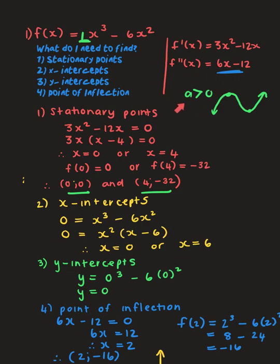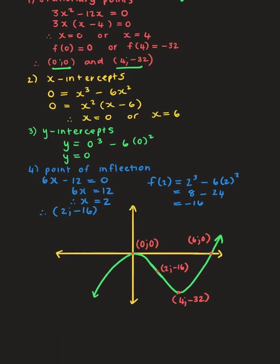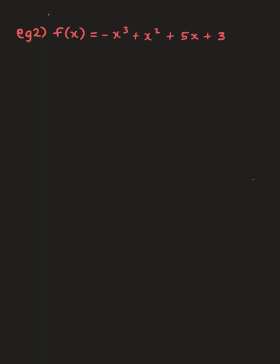To recap: I found the first and second derivative, noted that 'a' is positive so the graph starts by increasing, determined two stationary points giving me the orientation, then found x-intercepts, y-intercepts, and point of inflection — and from all that we drew the graph. Let's move on to example two.